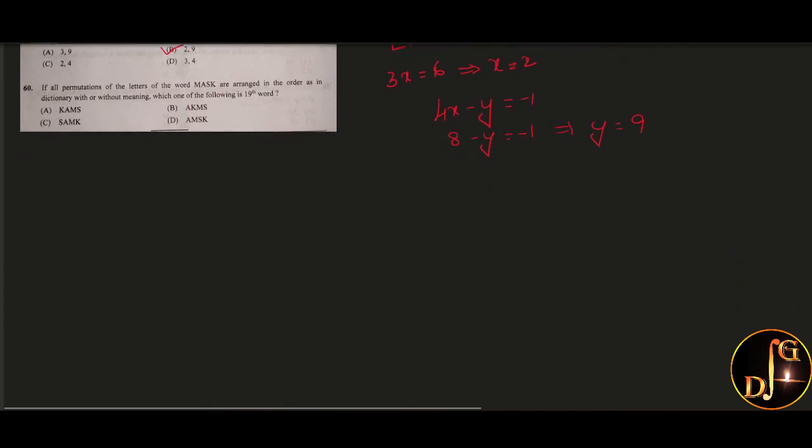Next, if all permutations of the letters of the word MASK are arranged in the order as in the dictionary with or without meaning, which one of the following is the 19th word? First, arrange in alphabetical order A, K, M, S. First, when the word starts with A, there are 3 factorial, that is 6 words start with A. Similarly, 6 words start with K and 6 words start with M. That gives 18 words. We need the 19th word. So 19th word starts with S, then A, then K and M. This is the 19th word. There is no option which is matching this answer. So this is a grace question.